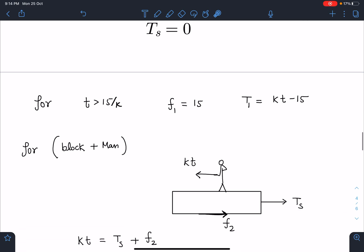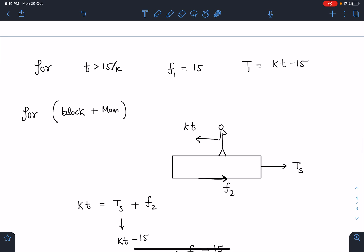Now for man plus block system, if you see, because that string will come back and it will be acting here. So this is Ts and this is kt and the remaining friction F2 we can apply in this direction. So if the system is at rest here, kt is equal to Ts plus F2.